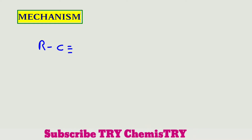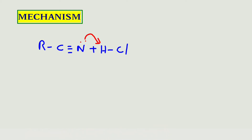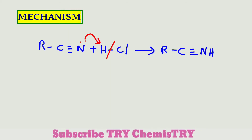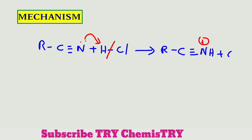In the mechanism, when nitrile reacts with hydrochloric acid, the nitrogen contains a lone pair of electrons. It donates one electron to the hydrogen; at the same time, the hydrogen-chlorine bond breaks. We get the product R–C≡N–H with a positive charge on the nitrogen, along with Cl⁻.